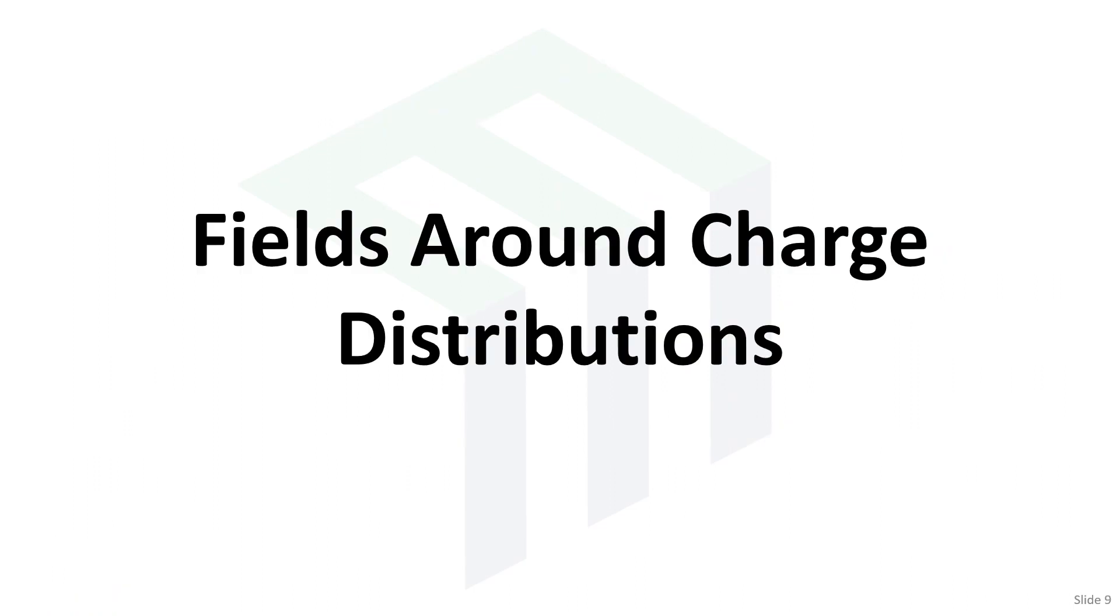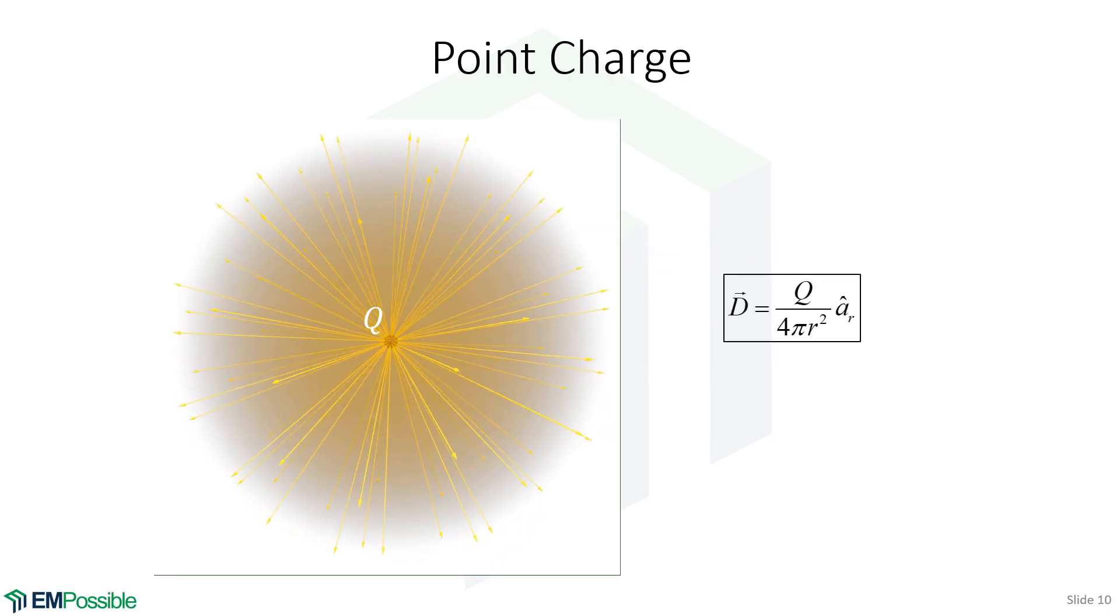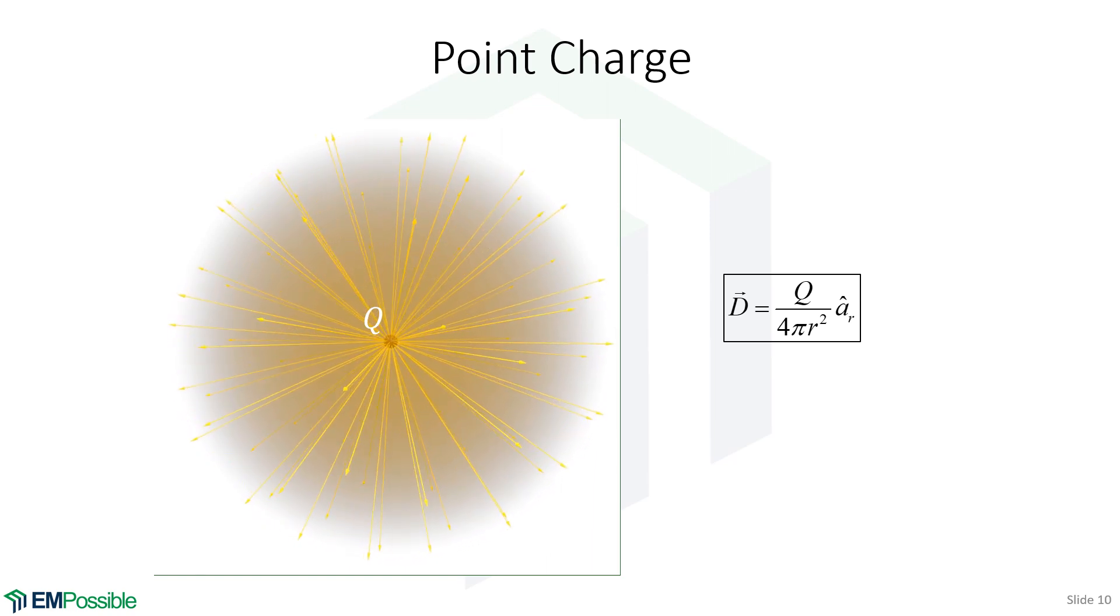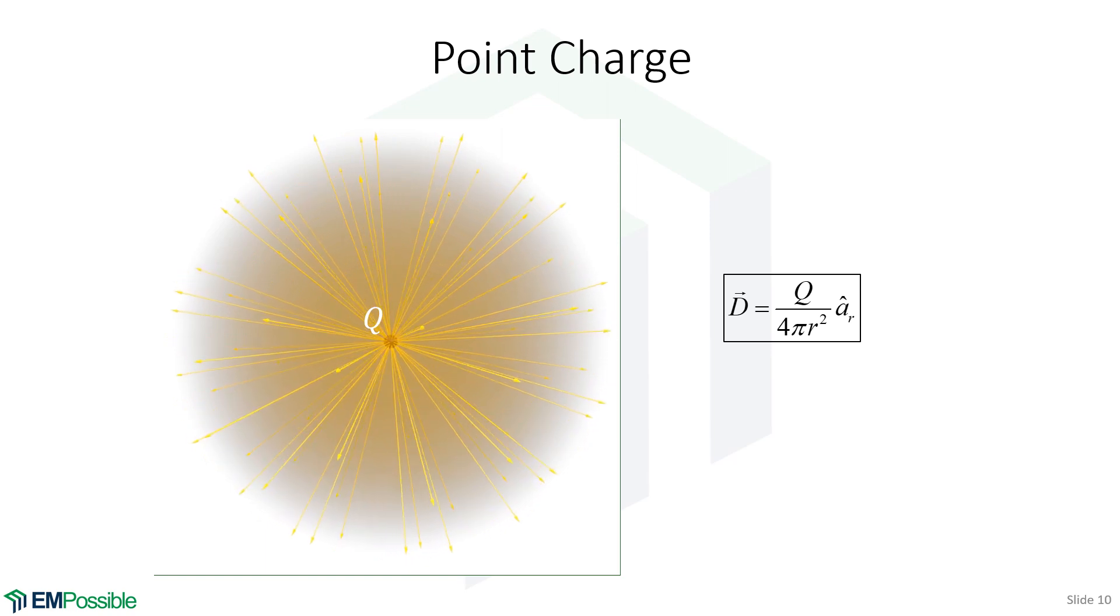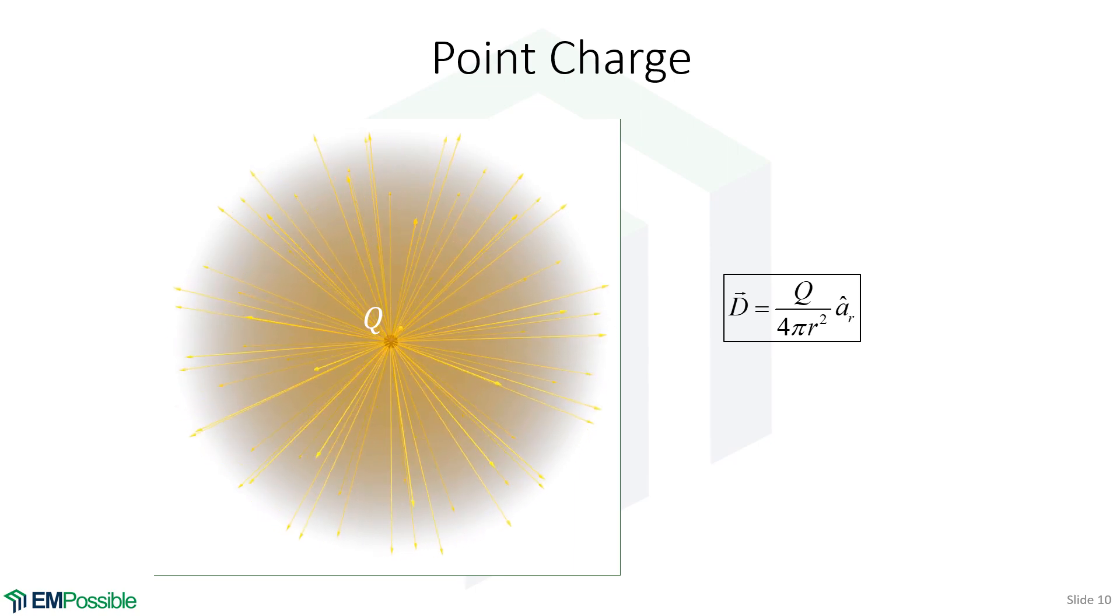Fields around charge distributions. So we start off with a point charge, and we're very familiar with this. The fields diverge from a positive charge, and they're in the radial direction. And of course, they would converge from a positive charge to a negative charge. So it's clearly a positive charge that we're showing here.